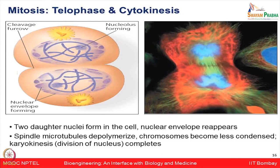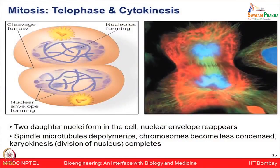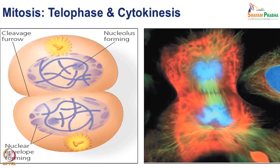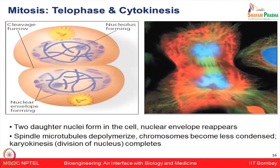In telophase, two daughter nuclei form in the cell, and the nuclear envelope starts reappearing. The spindle microtubules get depolymerized, chromosomes become less condensed, and karyokinesis — division of the nucleus — gets completed. In cytokinesis, cell furrows form and the division of cytoplasm gives rise to two daughter cells.